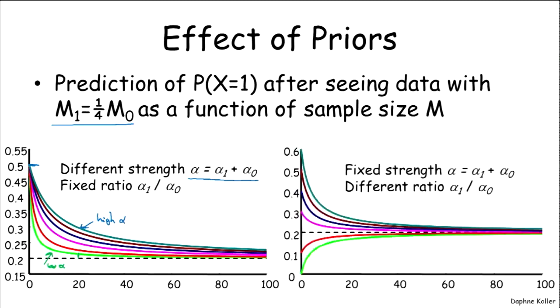Now let's look at varying the other parameter. We're going to now fix the equivalent sample size. And we're going to just start out with different priors. And we can see that now we get pulled down to the 0.2 value that we see in the empirical data.